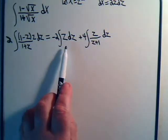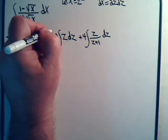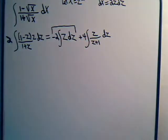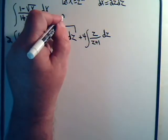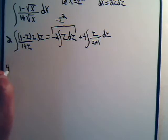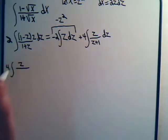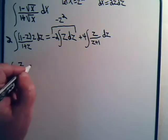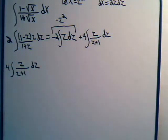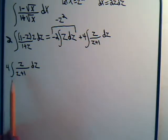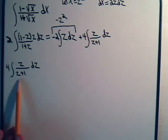The first integral we can do right away — that's just minus z squared. But what about the second integral? We have the integral of 4z over z plus 1 dz. That's not exactly in a form for using trig substitutions, but it's tempting to try it anyway because we've got the z term up here. So what if we said, let z equal the tangent squared of theta?